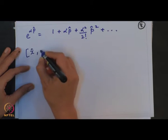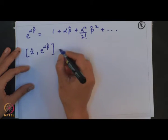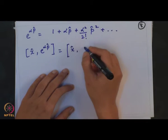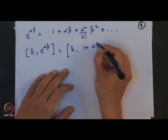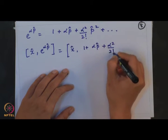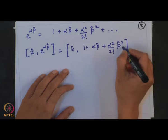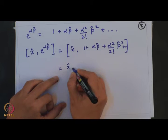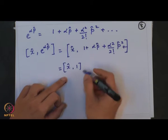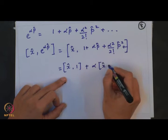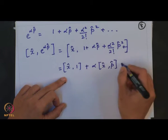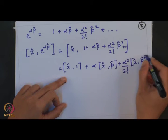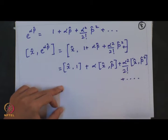When I do this, this becomes the commutation of the position operator with each term of the exponential series. The first term gives [x̂, 1] = 0, the second term gives [x̂, αp̂], and the third term involves [x̂, p̂²], and all the higher terms.